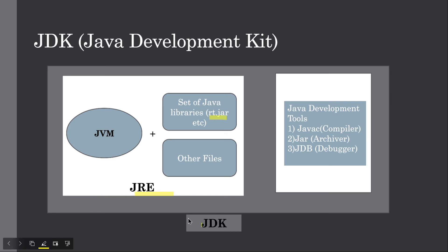So basically, JDK consists of JRE, and JRE consists of JVM. This is the whole structure of JDK.